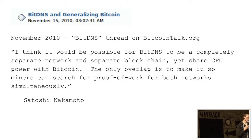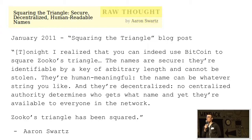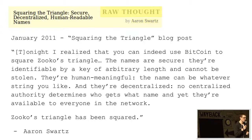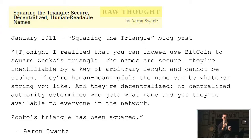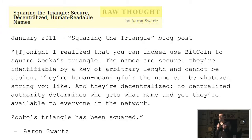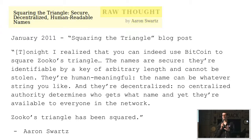In January 2011, Aaron Swartz published a post called 'Squaring the Triangle: Secure, Decentralized, Human-Readable Names,' writing: 'Tonight I realized that you can indeed use Bitcoin to square Zooko's Triangle. The names are secure, human meaningful — the name can be whatever string you like — and they're decentralized; there's no central authority who determines who gets what name. Zooko's Triangle has been squared.'